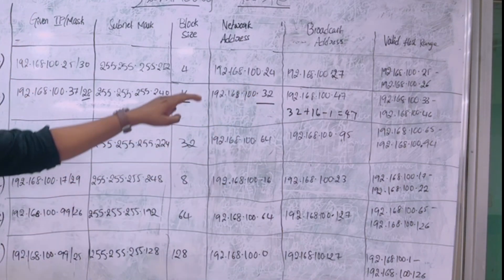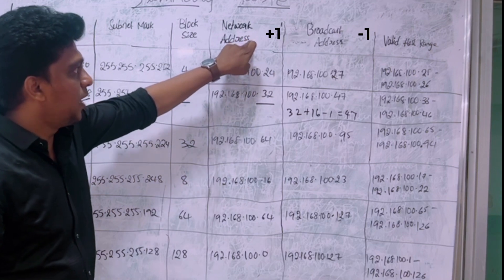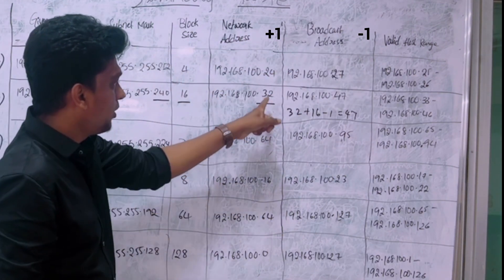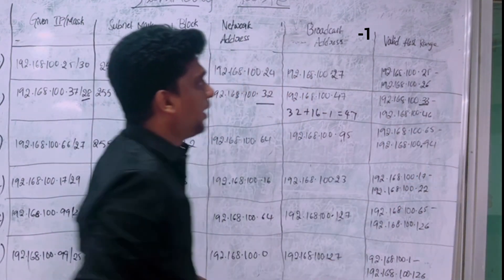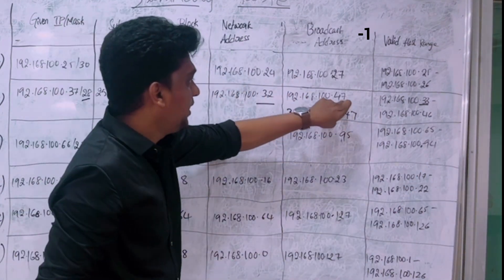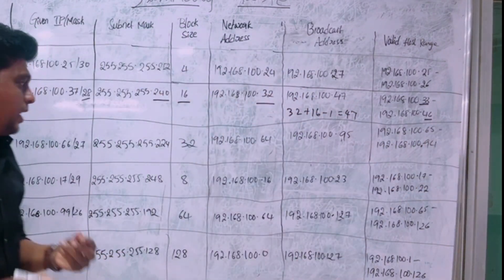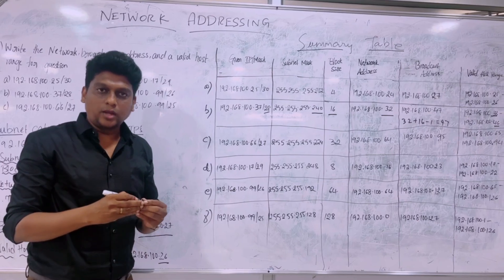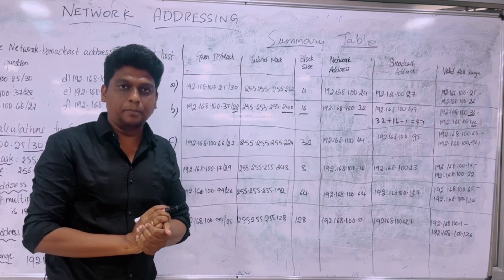The valid host range is found by adding 1 to the network address and subtracting 1 from the broadcast address. Adding 1 to 32 gives 33, and subtracting 1 from 47 gives 46. So the valid host range is 33 to 46. In a similar way, all subnets have been identified with network address, broadcast address, and valid host range.